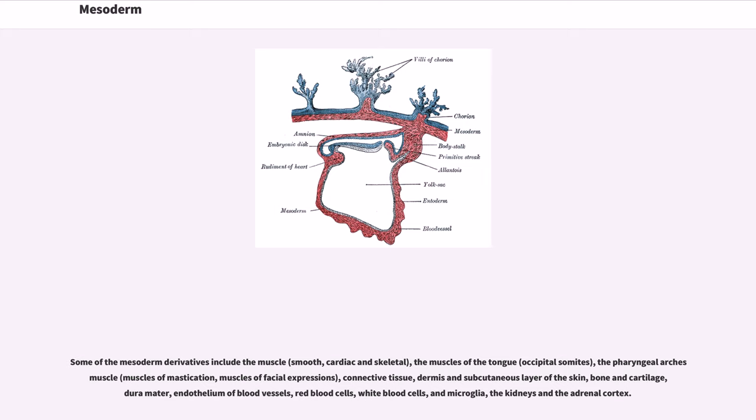Some of the mesoderm derivatives include the muscle, the muscles of the tongue, the pharyngeal arches muscle, connective tissue, dermis and subcutaneous layer of the skin, bone and cartilage, dura mater, endothelium of blood vessels, red blood cells, white blood cells, microglia, the kidneys and the adrenal cortex.